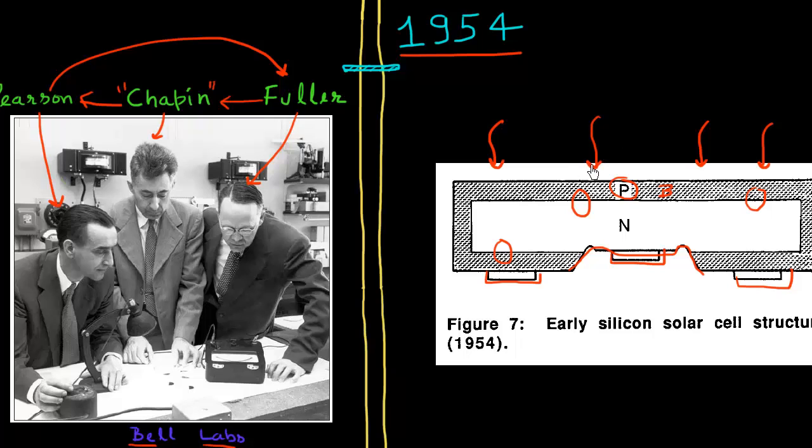But so this device, when this was measured and optimized, this could achieve efficiency of close to 6%. Which was a big jump from the previous selenium based solar cells, which had an efficiency of less than 1%. So this was, again, so Bell Labs made a big announcement about this invention. And this is one of the photographs that I'm borrowing from their archives. And it's interesting to note that scientists used to wear coats and tie at that time to work, which is something I haven't seen recently. The culture of dressing in labs at least has changed.